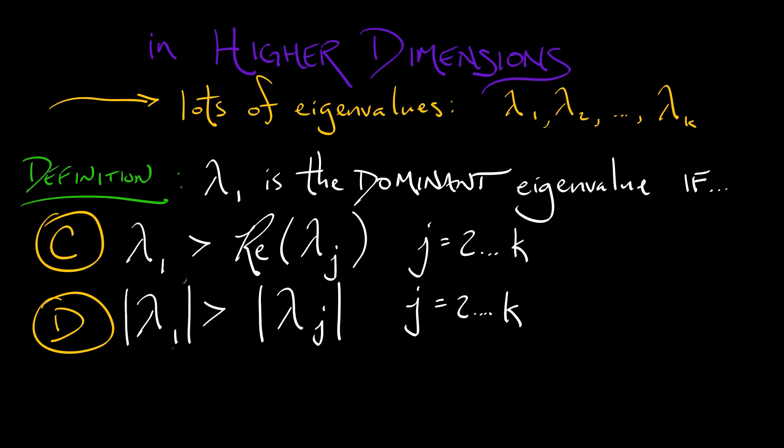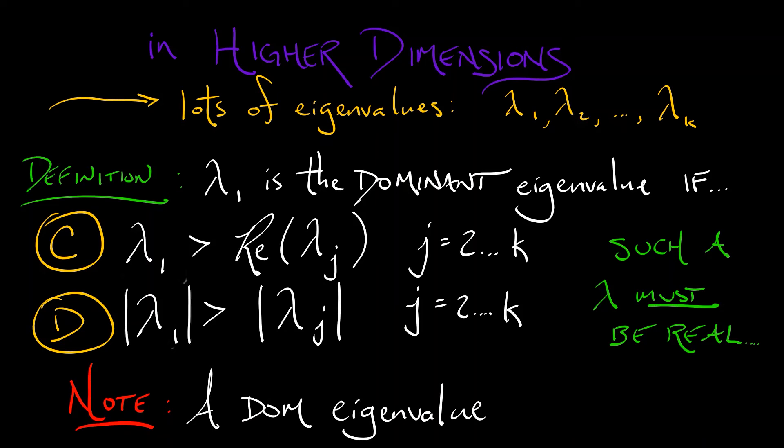By this definition, it is implied that the dominant eigenvalue must be real. To which you might ask, well, what if all the eigenvalues are complex? What if they're all repeated? There is no guarantee that a dominant eigenvalue exists. It may or may not exist. But if it does exist, it must be real.